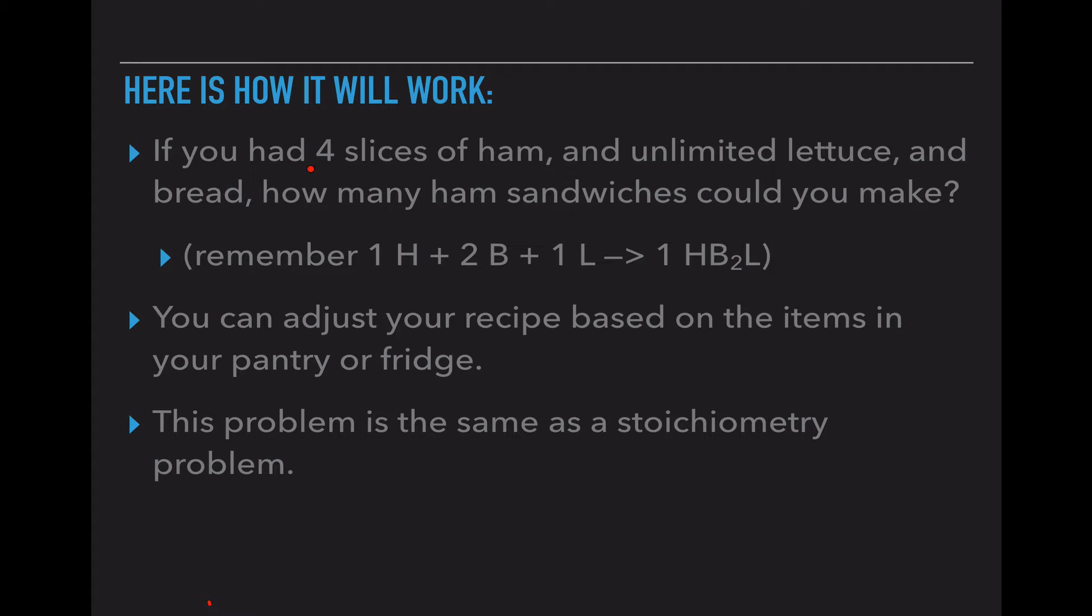So up here it says I have four slices of ham. So instead of writing a one in front of the H in the chemical formula, I'm going to write a four. So four slices of ham, and instead of two pieces of bread for one sandwich, if I have four slices of ham, I need eight pieces of bread. We're just going to multiply those. And instead of one piece of lettuce, I need four pieces of lettuce. And this creates four ham sandwiches.